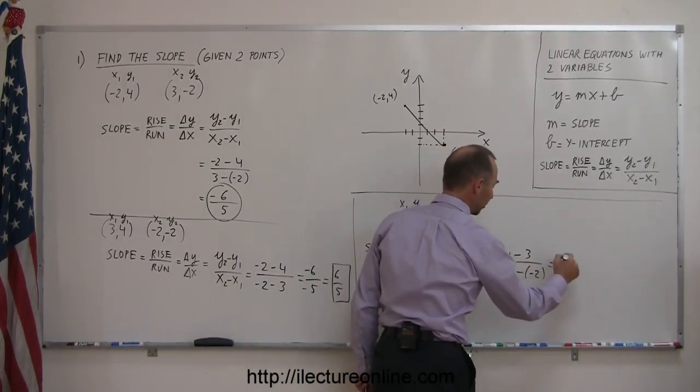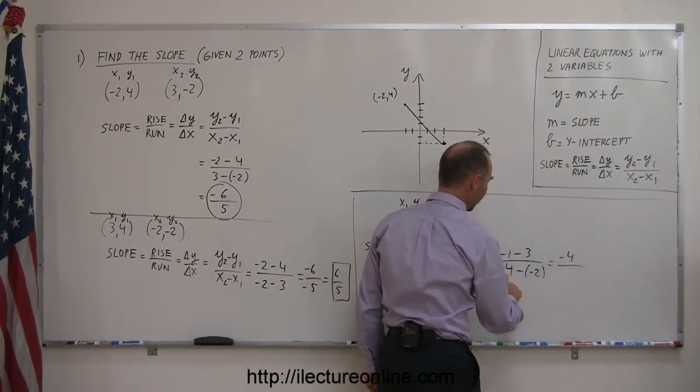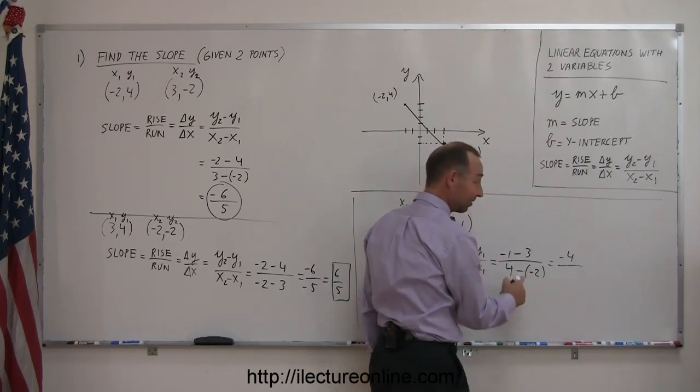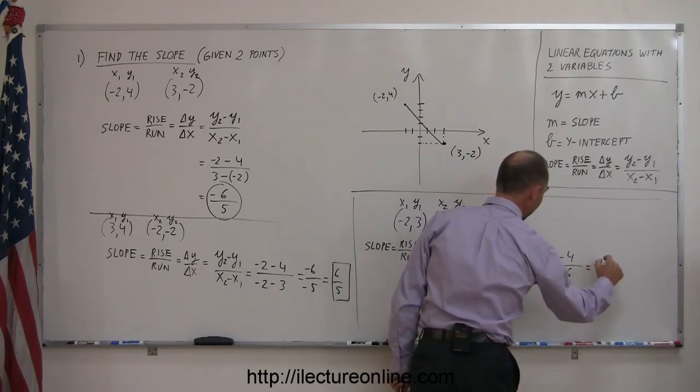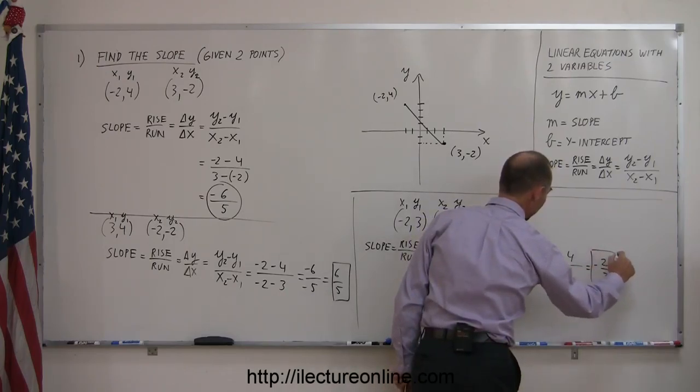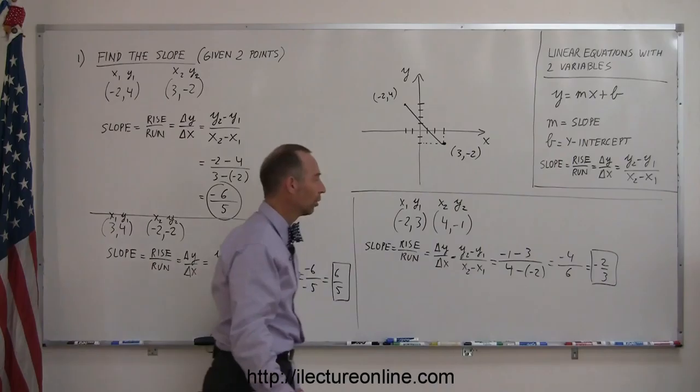All right, working this out, you get minus 1 minus 3 is minus 4, divided by 4 minus a minus 2. That's the same as adding the positive number, so that's 4 plus 2, which is 6, or negative 2 thirds. So there's the slope between those two points.